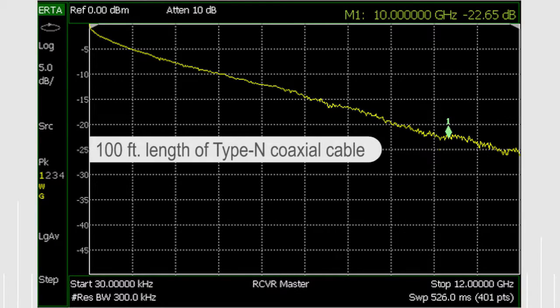Here we see loss through a long cable measured with ERTA. You can see that it sweeps from 30 kilohertz to 12 gigahertz in 526 milliseconds.